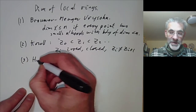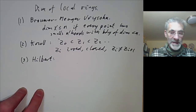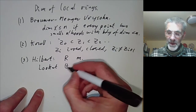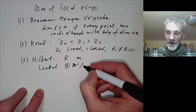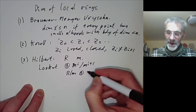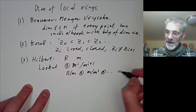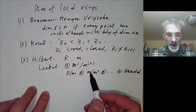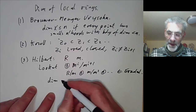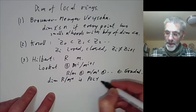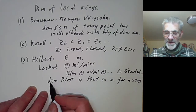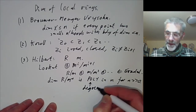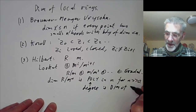Thirdly, we have the definition using Hilbert polynomials. If you have a local ring R with maximal ideal M, we look at the sum of M^i over M^{i+1}, which is R/M plus M/M² and so on — a graded ring. Since R is Noetherian we can apply the theorem on Hilbert polynomials, and the dimension of R/M^n as a vector space is a polynomial in n for large n. The degree of this polynomial is the dimension of R.